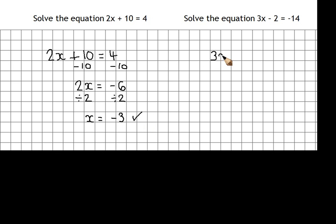Next one, 3x minus 2 equals minus 14. So we've got a negative number on the other side of the equation this time. The process is still the same. First of all, sort out this take away 2. So the opposite of take away 2 is adding 2. And then we have to do the same to the other side.